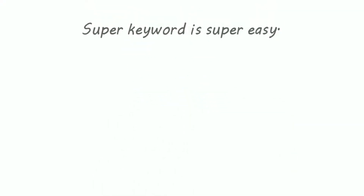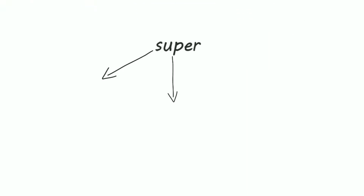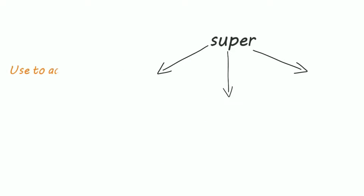Hi guys, the super keyword is super easy. We only have three uses of the super keyword, and we use the super keyword in inheritance. The first use is to access the variables of a parent class.